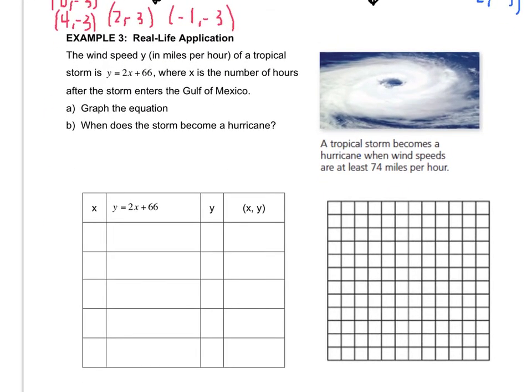Last one together. The wind speed, y, of a tropical storm is y equals 2x plus 66, where x is the number of hours and y is miles per hour. So I just underlined some important information. After the storm enters the Gulf of Mexico. A. Graph the equation. So before I even look at B, I'm going to do letter A. And if x represents the number of hours, does it make sense for me to have negatives? Can you have negative hours?